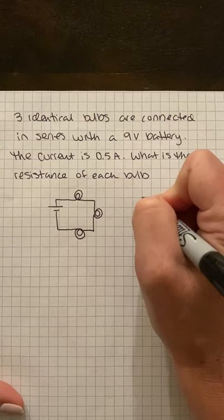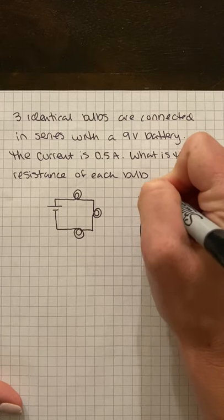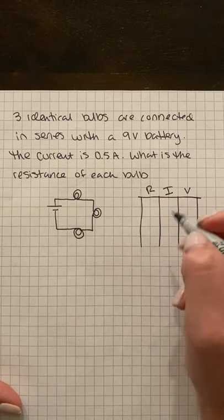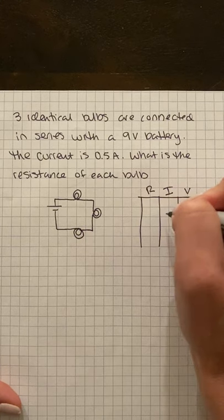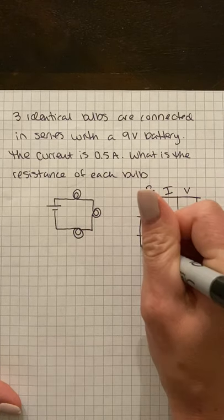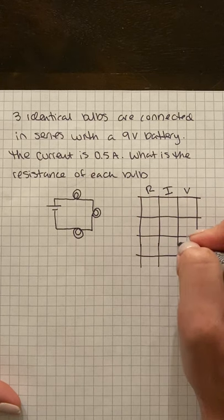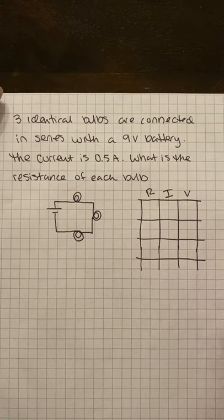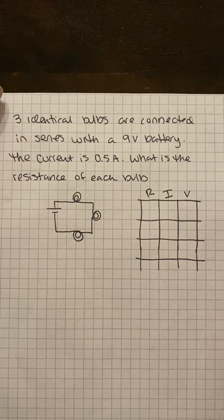So we are going to have our resistance, our current, and our voltage, and we have three bulbs.